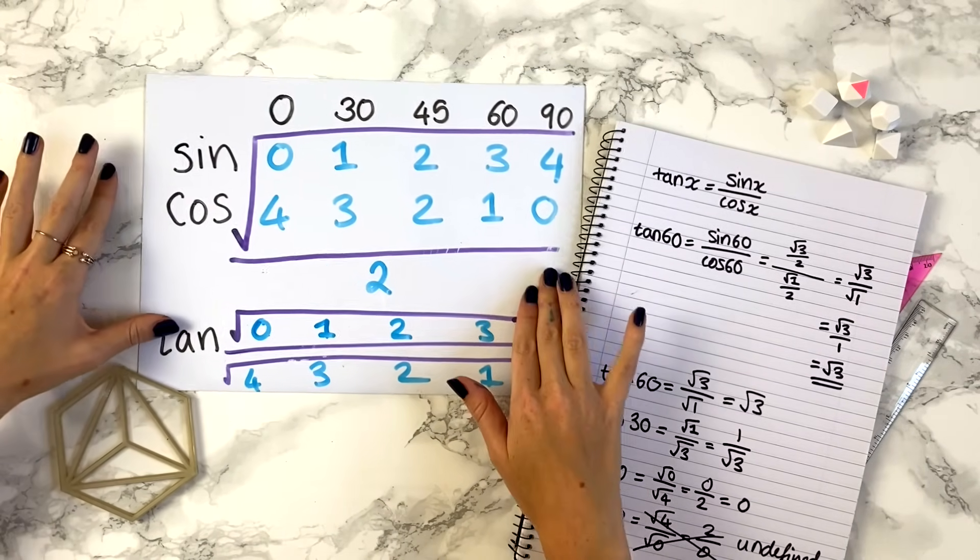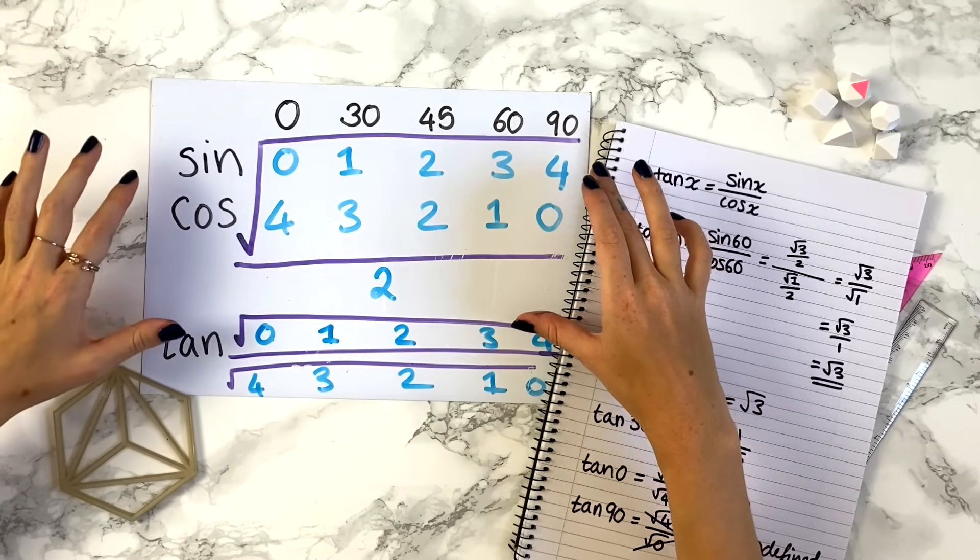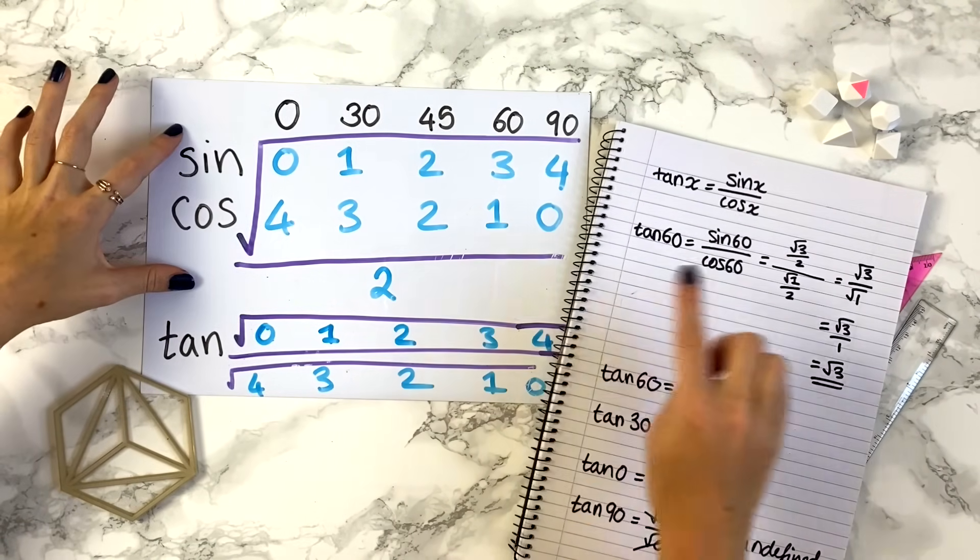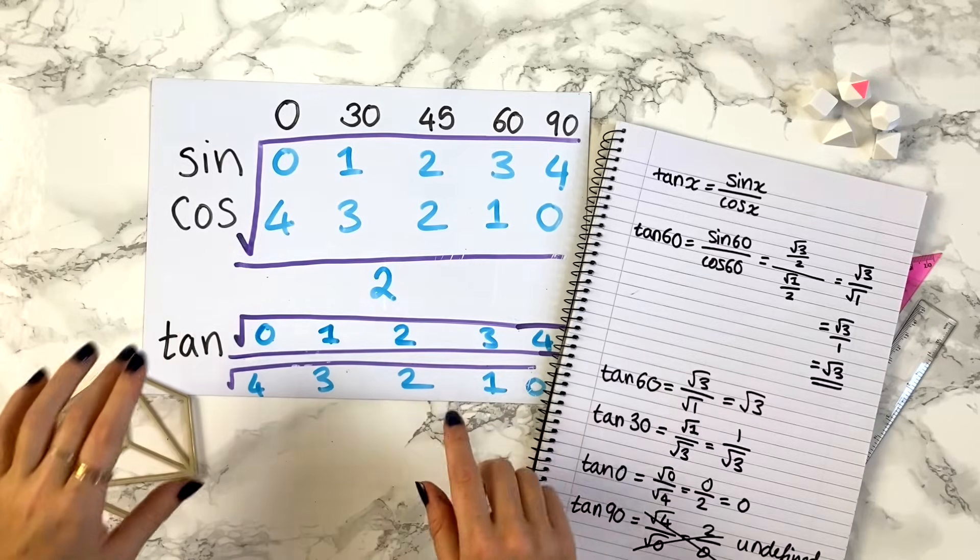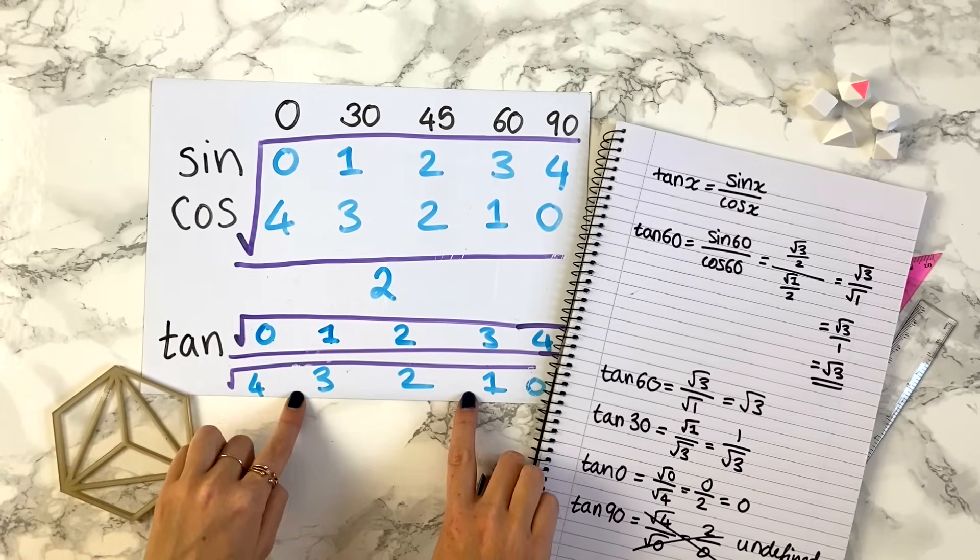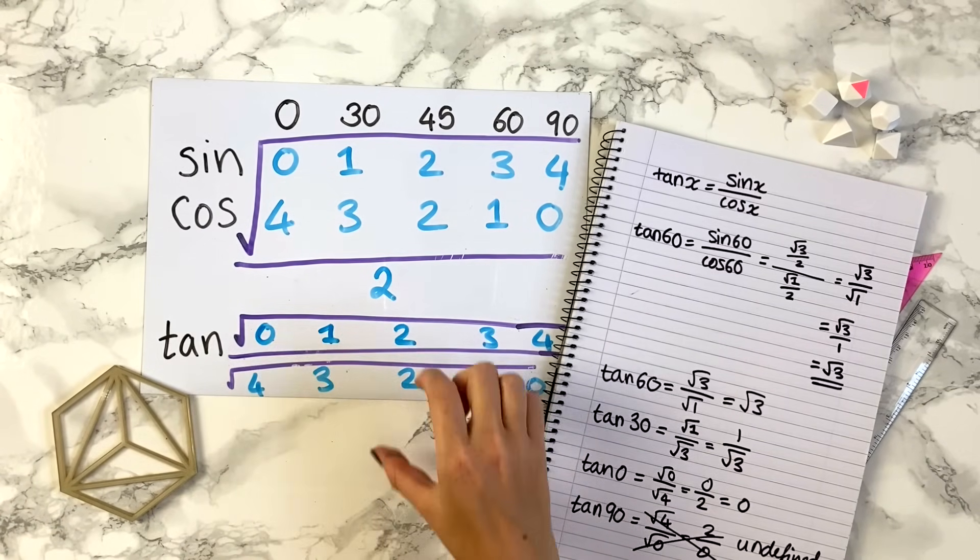So there you go. I think the key thing to remember is this sine and cos diagram, and you can always work the tan values out using just this like we did up here. But if it helps you save time, you can also write this tan diagram, and you can find tan values directly using this second diagram.